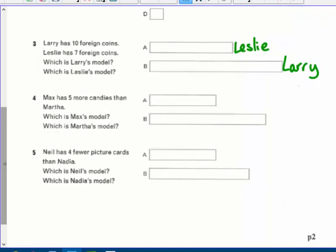Larry's should be longer than Leslie's. Max has five more candies than Martha, which is Max's model? Well, Max has more. So Max would be the longer bar, right? And Martha would be the shorter one. So very simple. Yes, you could do this in first grade.